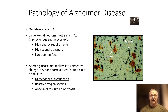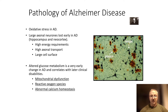One of the things we see underlying the amyloid cascade hypothesis of Alzheimer's disease is something called oxidative stress. We know that in early Alzheimer's disease pathology we lose the large axons with a very high cell surface and high energy requirement. If we look at altered glucose metabolism, we see very early in Alzheimer's disease mitochondrial dysfunction, reactive oxygen species, and abnormal calcium homeostasis — all indicating high oxidative stress.